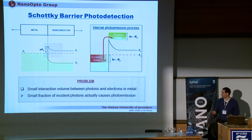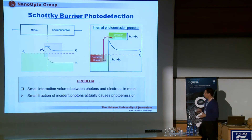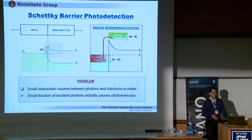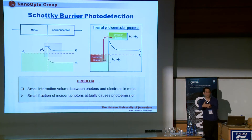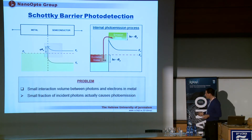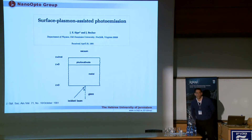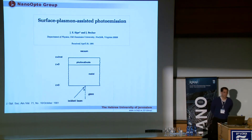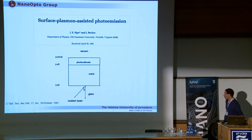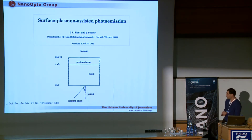At 1.5 micron wavelength we are talking about 0.8 eV energy for the photon, so it's higher than the Schottky barrier. We can use something called internal photo emission — hot electrons excited by the photons have sufficient energy to go over the Schottky barrier and be collected as a photocurrent. The Schottky junction separates the charges so we can actually get photocurrent out of this device. But there are lots of problems — for example, small interaction volume between photon and electron in a metal. Here we can use plasmonics to enhance the efficiency of the process.